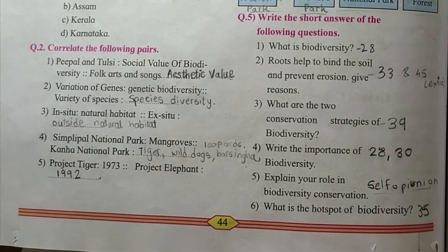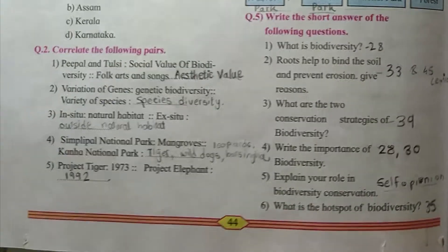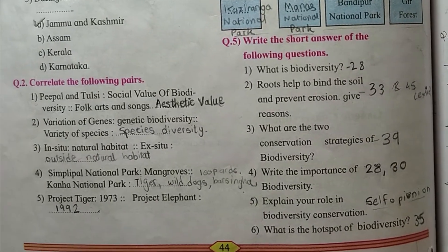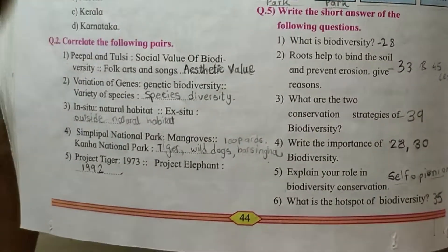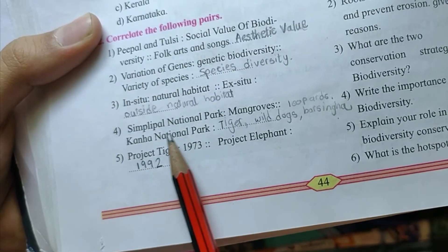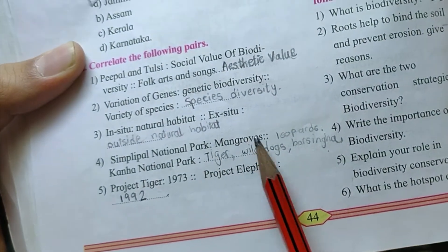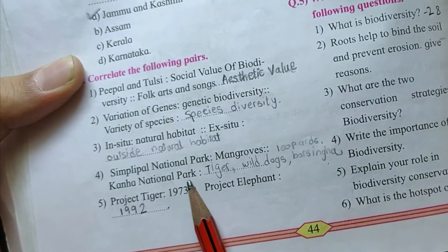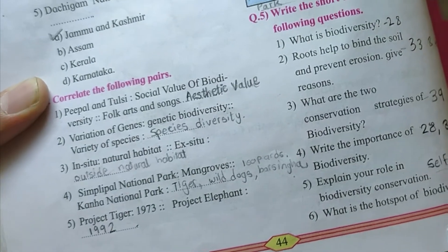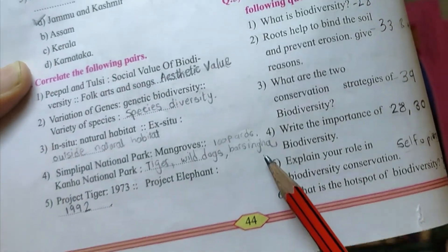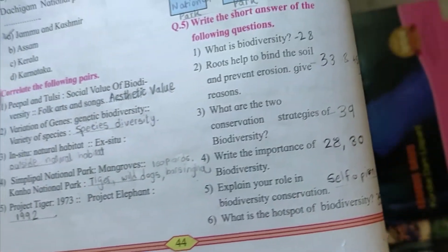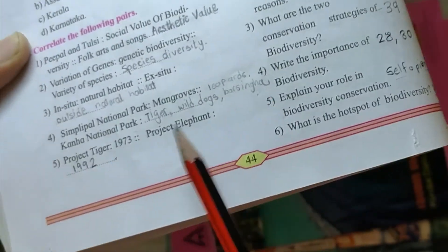Third, in situ natural habitat, ex situ outside natural habitat. Fourth, Simplipal National Park, mangroves, Kanha National Park, Tiger or Wild Dogs, Leopards or Barsingar, you can write any of these.